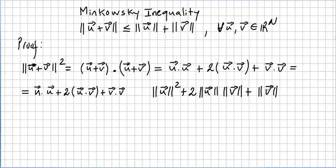And this last one, v·v, is ||v||². By the Cauchy-Schwarz inequality, we can say that this is smaller than this.